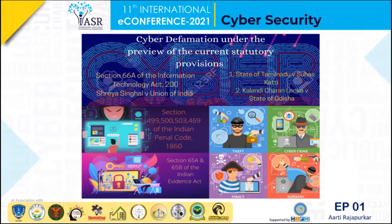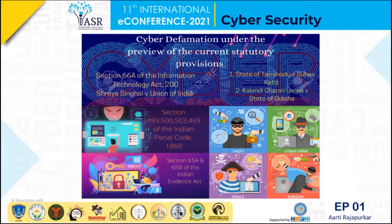After analyzing these provisions, there are a few lacunas that need more attention. One such lacuna is the migration of content. If a defamatory content is published online, that content gets migrated so quickly that the moment a website blocks that content, it has already reached a different website. We need to consider this quick migration and restrict the content completely and effectively.